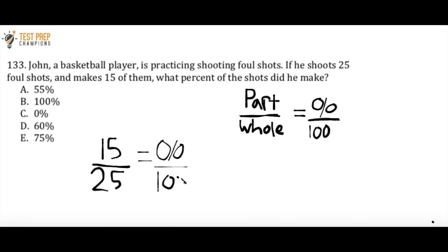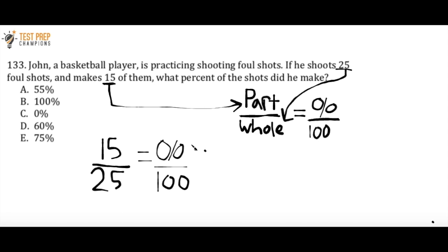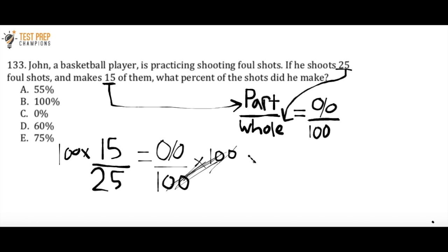All you have to do is understand that the part is the smaller number. So I'm going to take this 15 and plug it into the formula in place of part. Then I'm going to take 25, the bigger number, and that is going to be what I put in for the whole. So when I rewrite this I have 15 over 25 equals percent over 100. I'll multiply by 100 so the hundreds cancel on the right-hand side — essentially you do 15 divided by 25 times 100, and that gives you 60 percent.